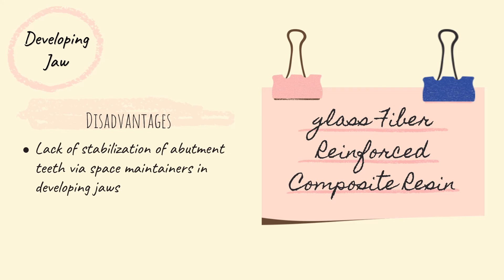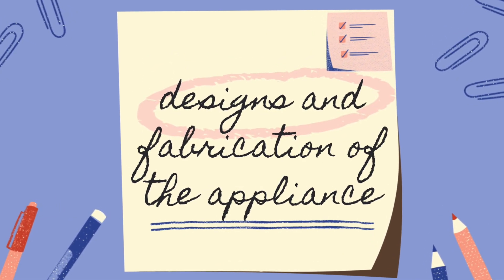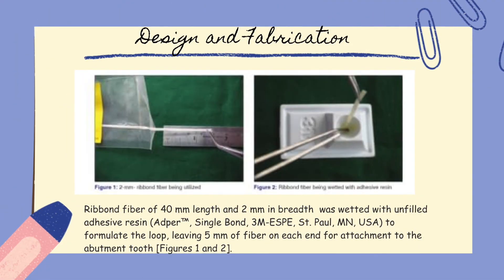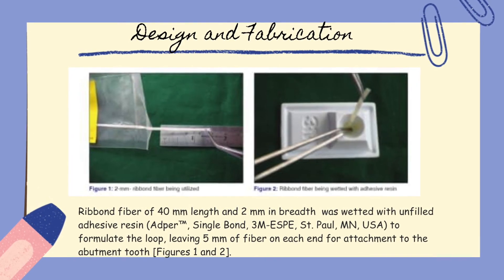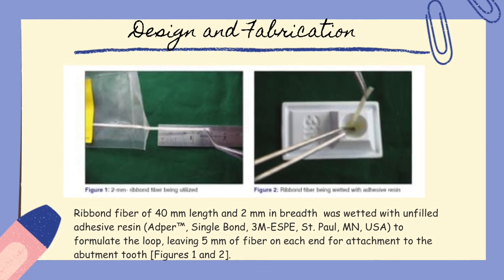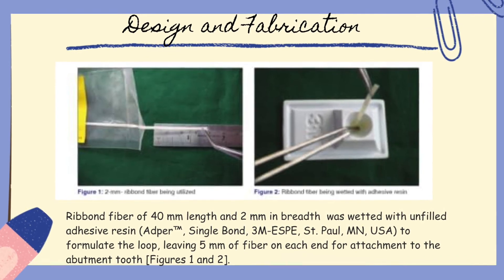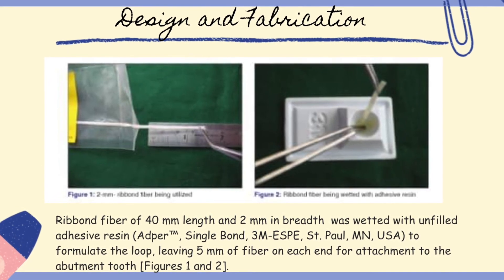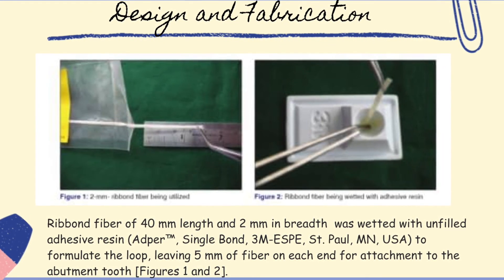However, research has shown that the flexible nature of fiber materials could possibly decrease this effect. I am Ken Jiyan and I will present the design and fabrication of glass fiber reinforced composite resin. The initial framework of the fiber reinforced composite resin loop was constructed using a commercially available polyethylene fiber system. A ribbon fiber of 40 mm length and 2 mm width was wetted with unfilled adhesive resin to formulate the loop, leaving 5 mm of fiber on each end for attachment to the abutment tooth, as shown in figures 1 and 2.